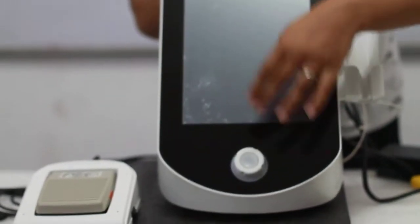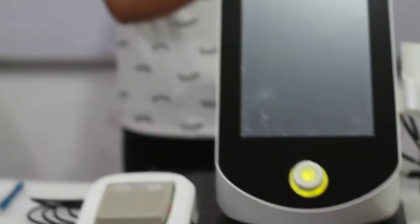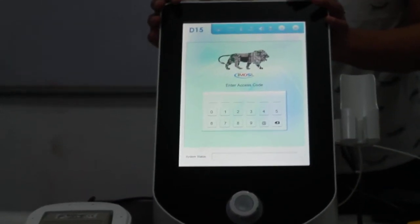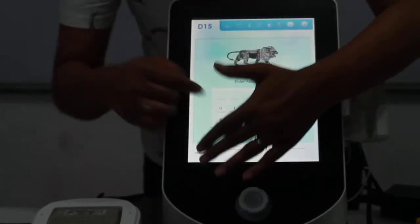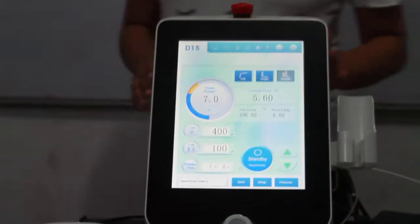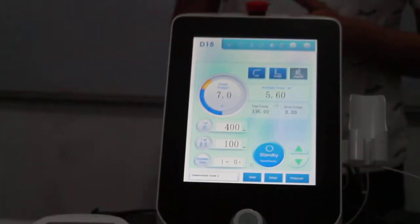Once it is connected, you have to put on your machine from the back side. There is an on and off button. Once you put on this machine, this will ask for your customized password. The password is provided by the machine.